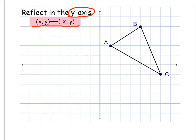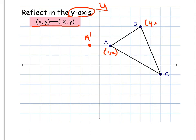Let's look at point A. Point A is at the ordered pair (1, 2). If I reflect in the y-axis — here's my y-axis — point A is one unit to the right, so the reflection will be one unit to the left. I'll put A prime right there. If you count that ordered pair, it's (-1, 2), so it follows this rule: the x becomes negative and the y remains the same. For point B, its ordered pair is (4, 4).